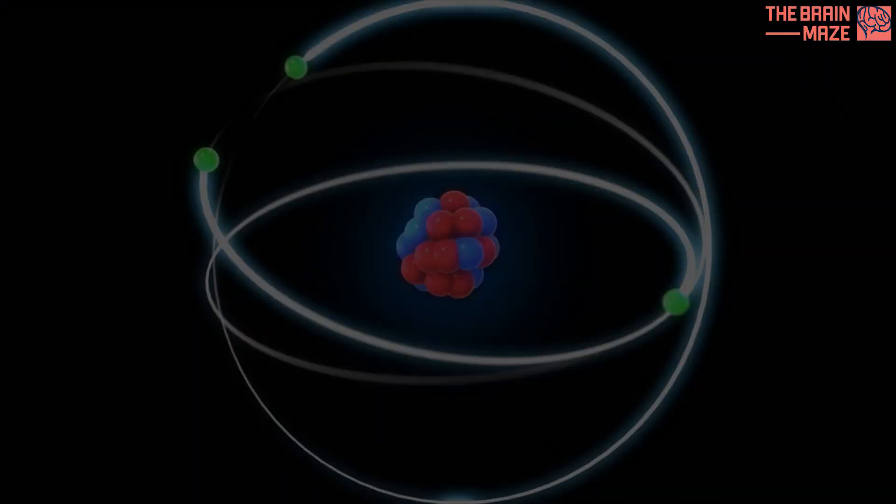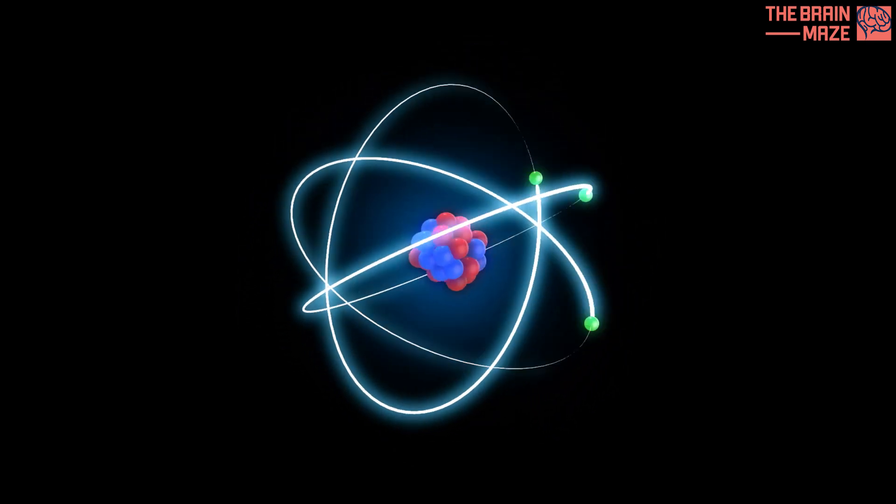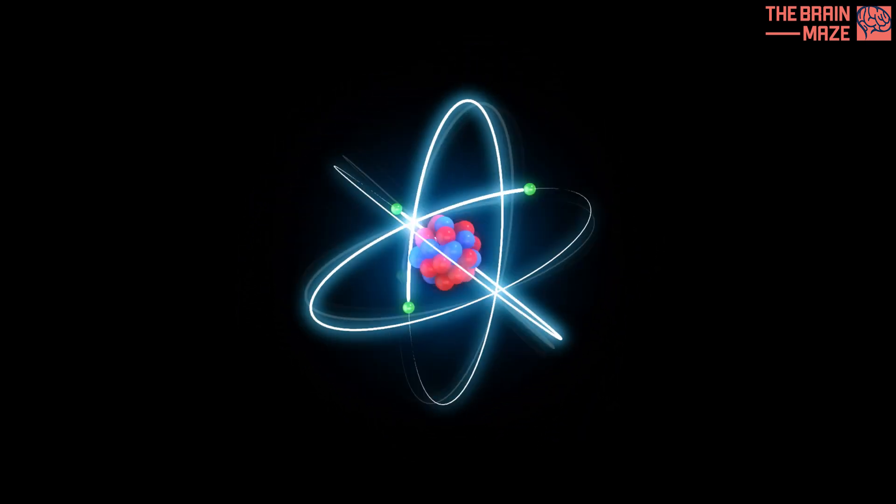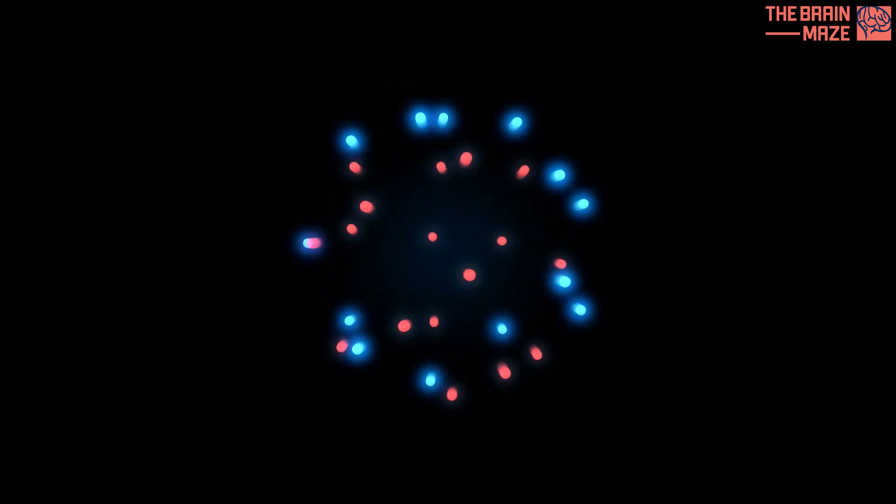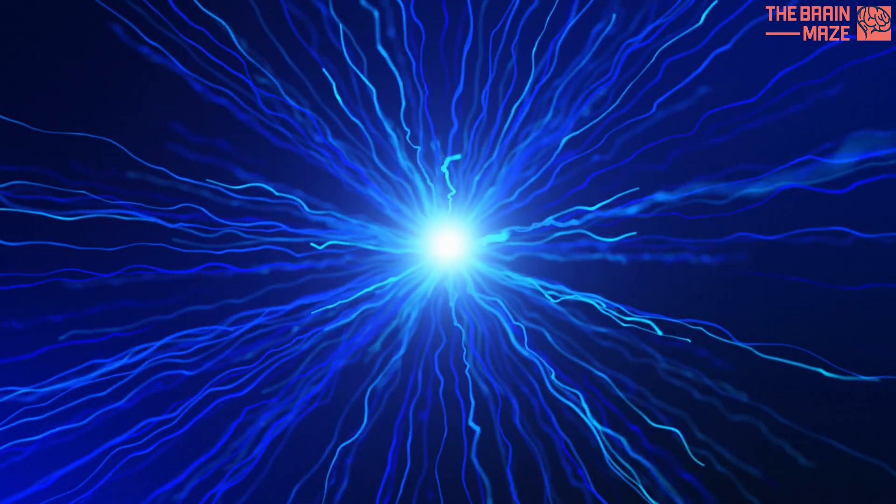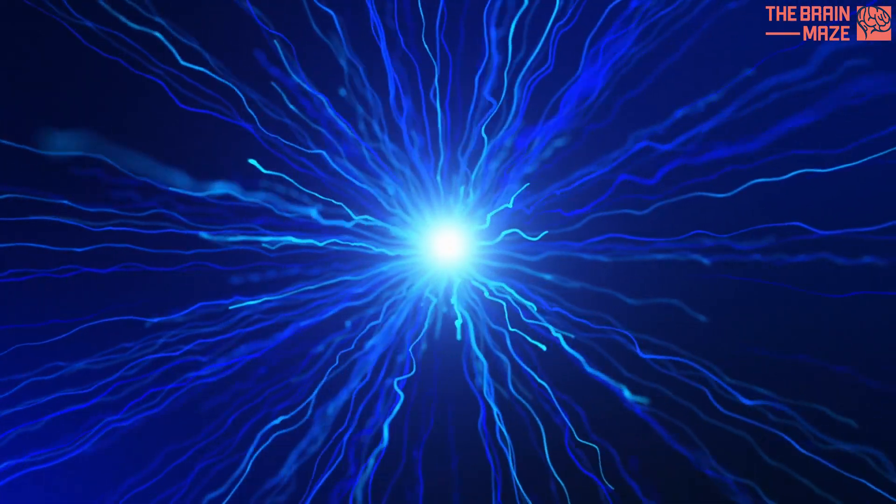We know there are trillions, maybe even quintillions of them, but what if that wasn't quite true? What if, according to a mind-bending theory, there's only one electron, zipping through time itself?